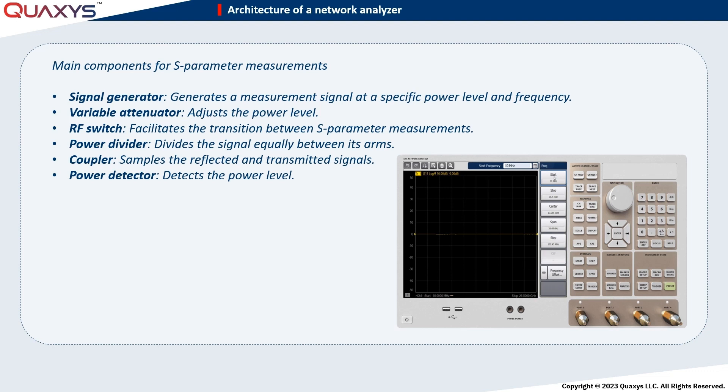As we will soon explore, the primary components of a network analyzer comprise the signal generator, variable attenuator, RF switch, power divider, coupler, and power detector.